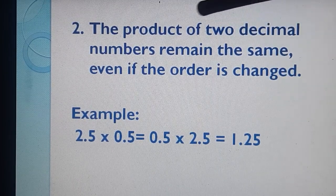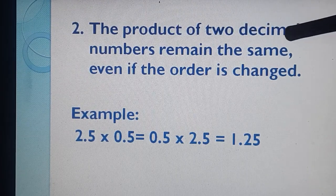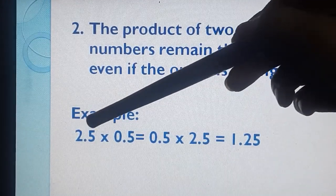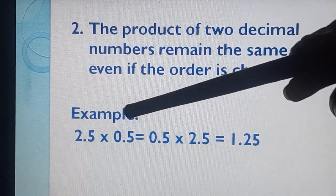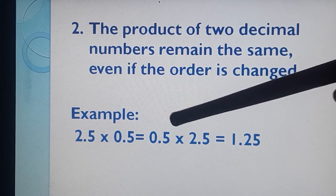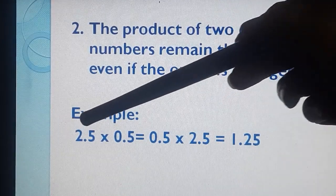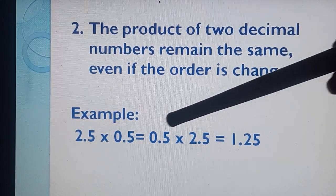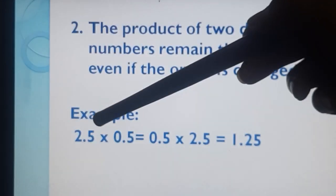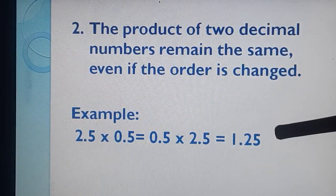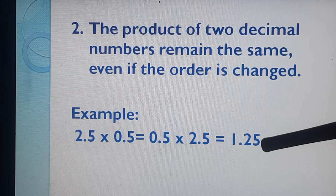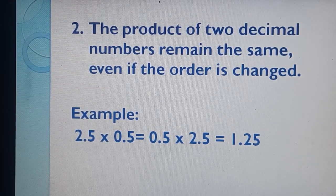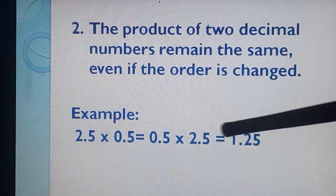Second property: the product of two decimal numbers remains the same even if the order is changed. See this example: 2.5 × 0.5. Both numbers are decimals. If we change the order to 0.5 × 2.5, what will be the product? First we leave decimals: 25 fives are 125. After decimal: 1 and 2 digits total — so we count 1 and 2 from the last and put the decimal. Our answer is 1.25. The product of two decimal numbers remains the same even if the order is changed.